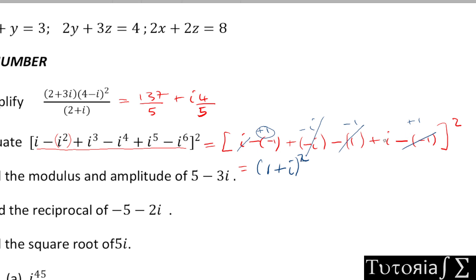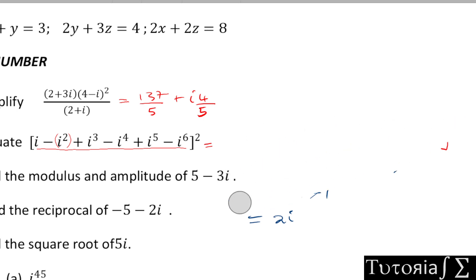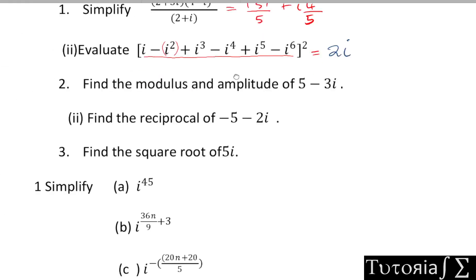Expanding (1 + i)²: that is 1² + 2i + i² = 1 + 2i - 1, and the 1 and -1 cancel, leaving 2i. So the expression inside simplifies to 2i.